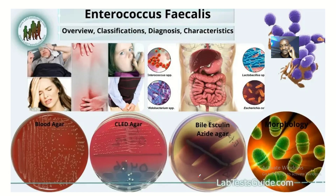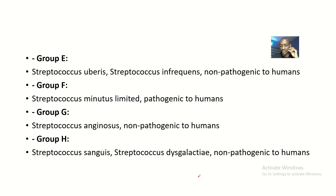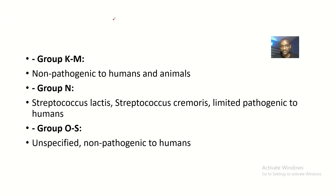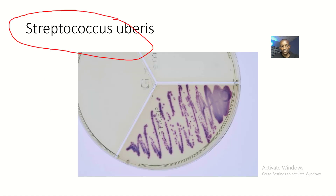Enterococcus faecalis can cause conditions such as diarrhea. Moving on to Group E, we have Streptococcus uberis and Streptococcus infrequens, which are non-pathogenic to humans. Here is the culture medium image for Streptococcus uberis.